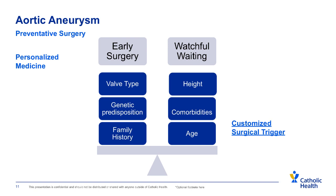We try to make this a customized process because every patient is different. My aorta is different than someone who is 5'7" or 6'4" with a family history. What sort of valve do they have? What other medical problems? We want to look at each individual patient and take all these different factors to offer an operation at the right time — personalized medicine. Genetics and family history also bring a lot to bear on whether an event is likely to occur and at what age.